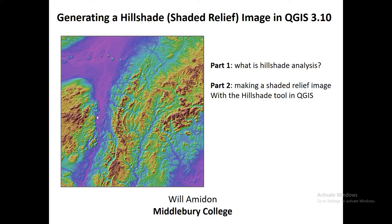So what is a shaded relief image? It's essentially built on a digital elevation model — you start with a grid of pixels where each pixel is an elevation value, and then you apply a simulated sunlight to it such that you generate a new raster with shadows, areas of dark and light that show the texture or the relief on the landscape, and then you can colorize that. So here we have the Adirondacks, Lake Champlain, the Green Mountains, and there's a tremendous amount we can learn from a shaded relief image.